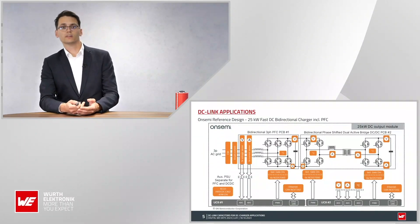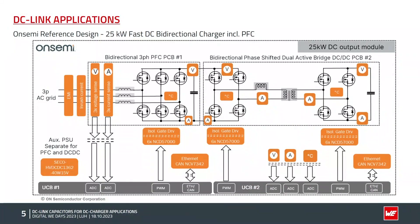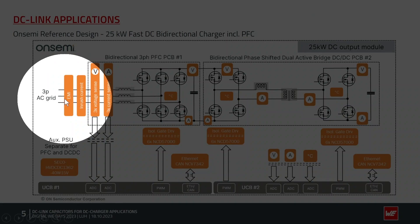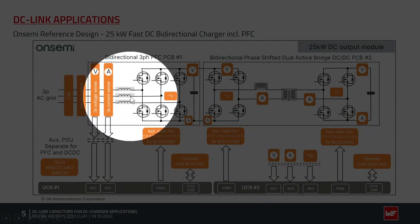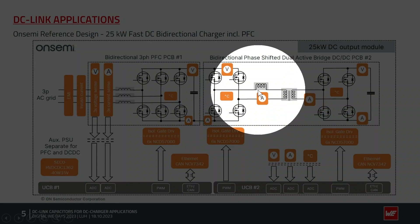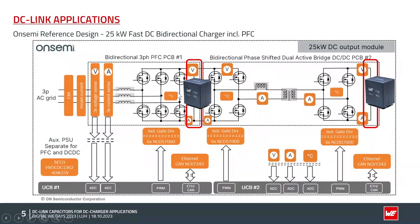Let's talk in more detail about one specific design — a 25 kilowatt fast DC bidirectional charger from Onsemi. Starting from the left-hand side, we have the three-phase AC grid with a bidirectional PFC. On the right-hand side we have the bidirectional dual active bridge, which enables bidirectional energy flow. And in between we have the DC-Link capacitors, where we worked closely together with Onsemi to implement our DC-Link capacitors into this design.